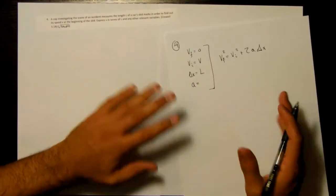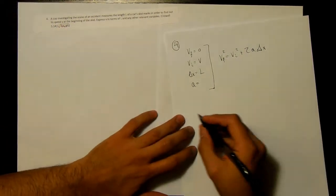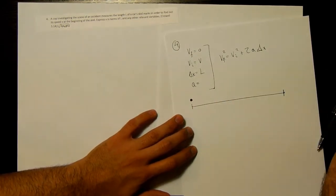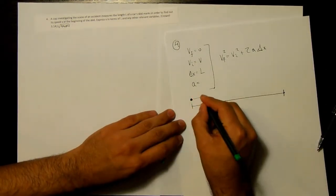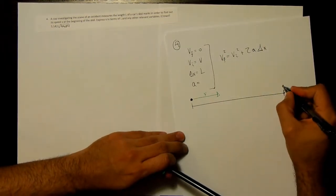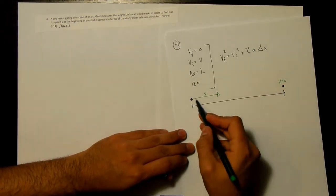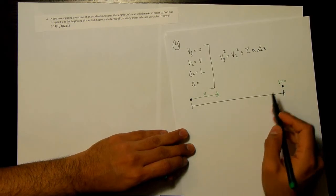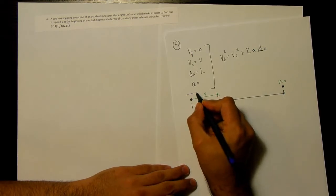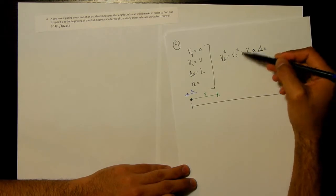So once again, we want to find out what V is at the very beginning of the skid. And you have a car that's moving with some velocity. And then at the end of some distance, the velocity is 0. So it's moving this way. It starts slowing down. Velocity is 0. And so we need to find out what this acceleration that it experiences is in order to figure out how to solve this kinematic equation.